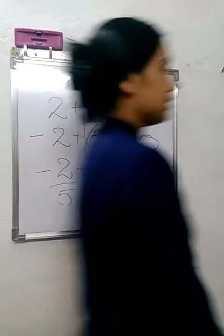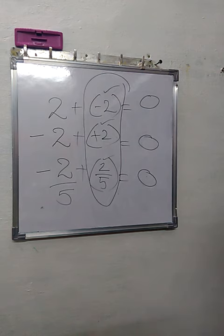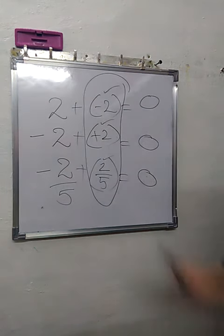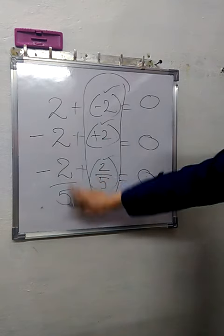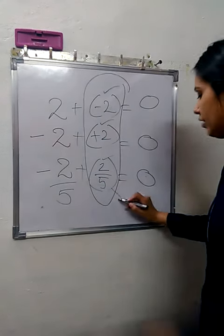So this is the next important property of rational numbers, which means you can say: if 2 by 5 is a rational number, then minus 2 by 5 is a rational number, then 2 by 5 is its additive inverse.